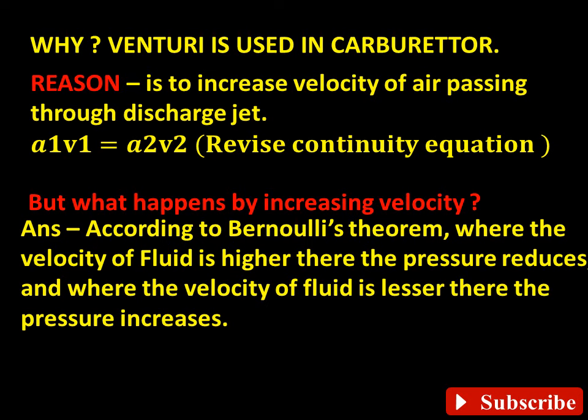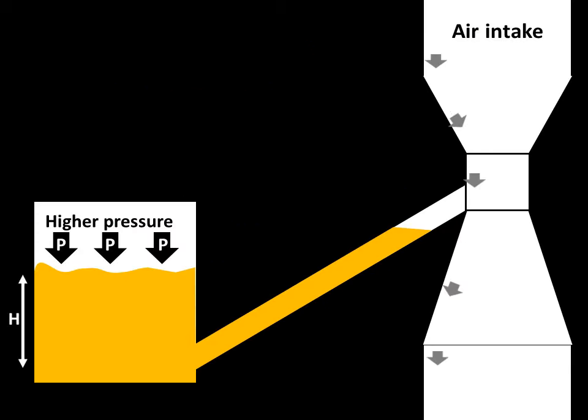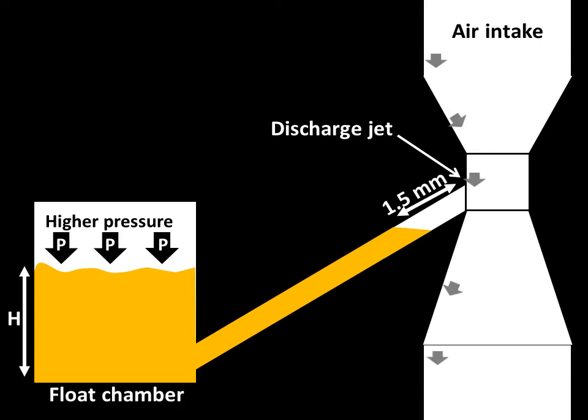Now let us see how this theorem works in carburetor. The height at which the fuel is maintained in the float chamber is controlled by the level required in the discharge jet. This level is 1.5 mm below the orifice at the top of the jet.